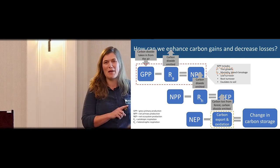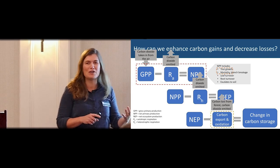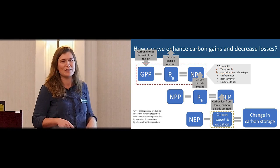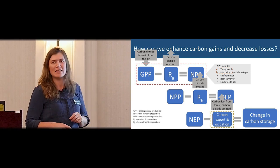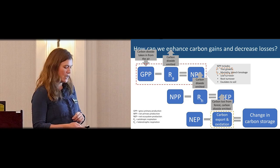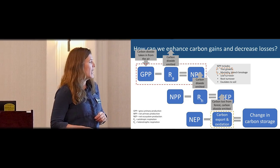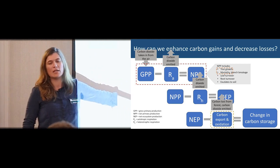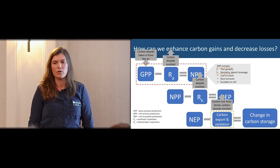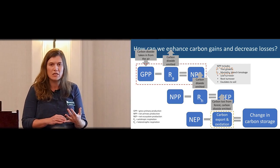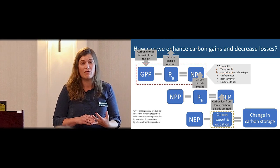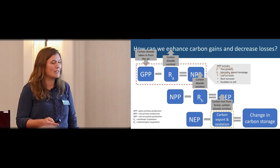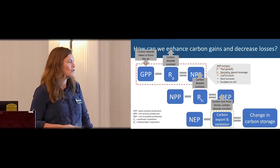We don't have a great way to measure leaf turnover, root turnover, or certainly not exudates in the soil — it's sort of a new science we're still learning about. We can reduce losses in some categories: reducing soil erosion, reducing fire, or even increasing incidence of fire through controlled burning.